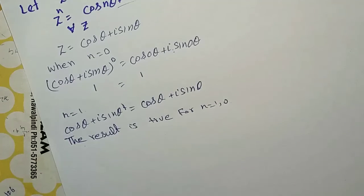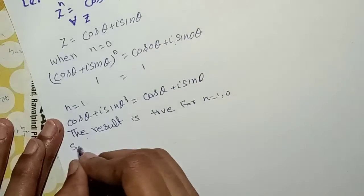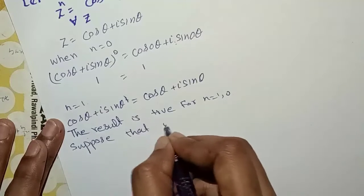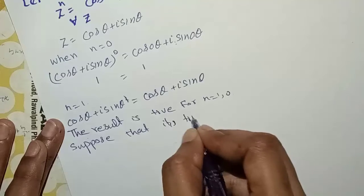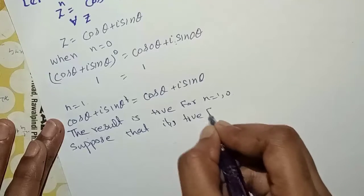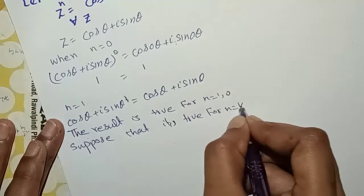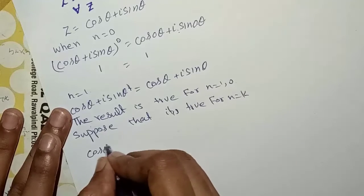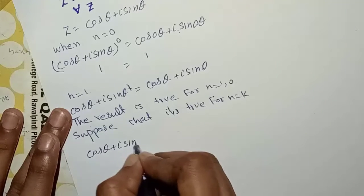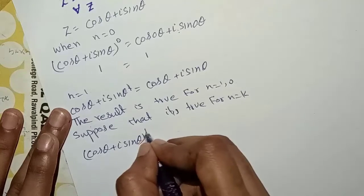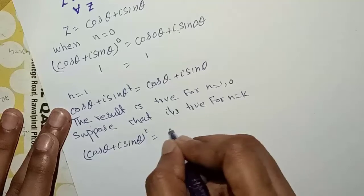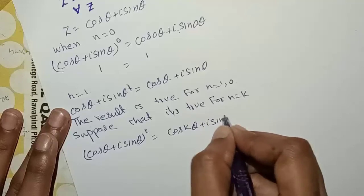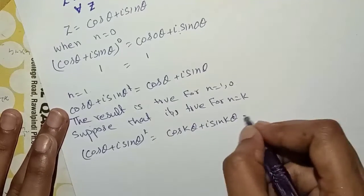Now suppose that the result is true for n equals k. Then we assume: cos theta plus iota sin theta to the power k equals cos(k·theta) plus iota sin(k·theta). We call this equation (1), and it is assumed to be true.